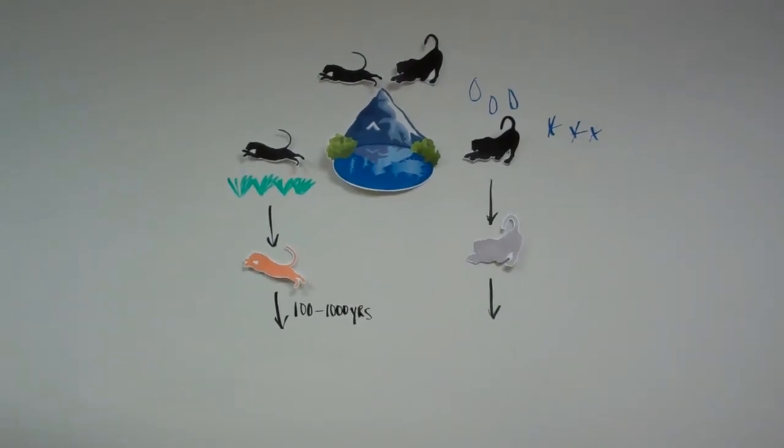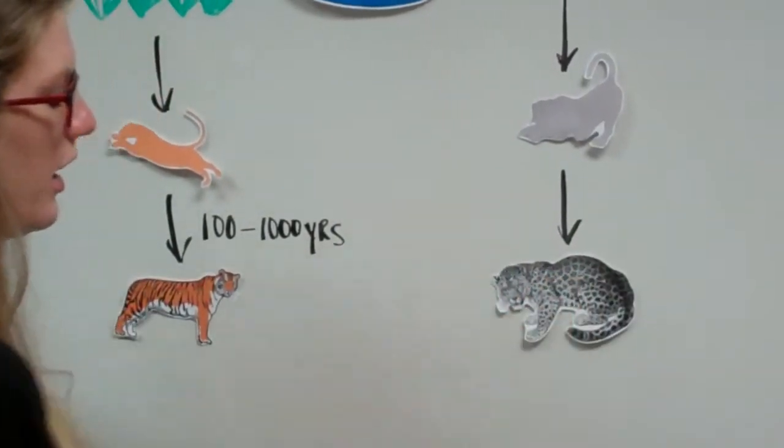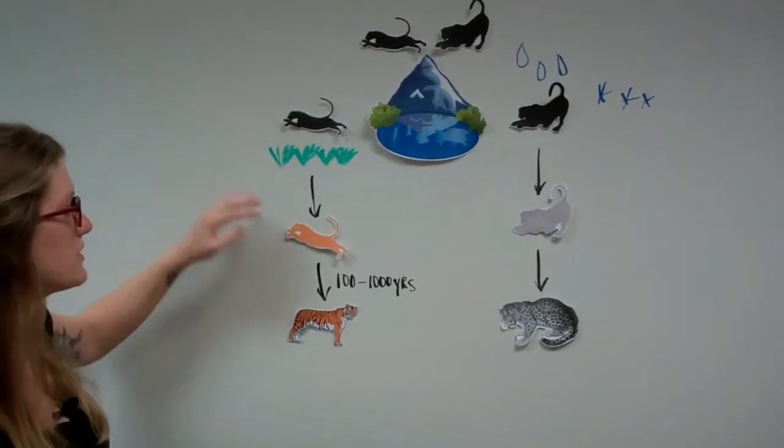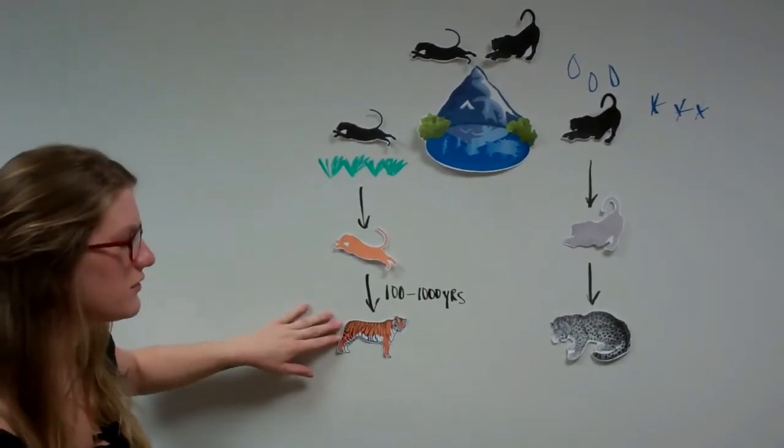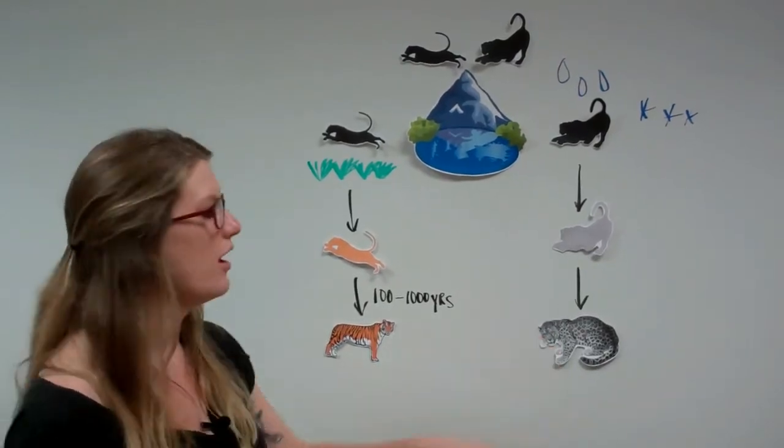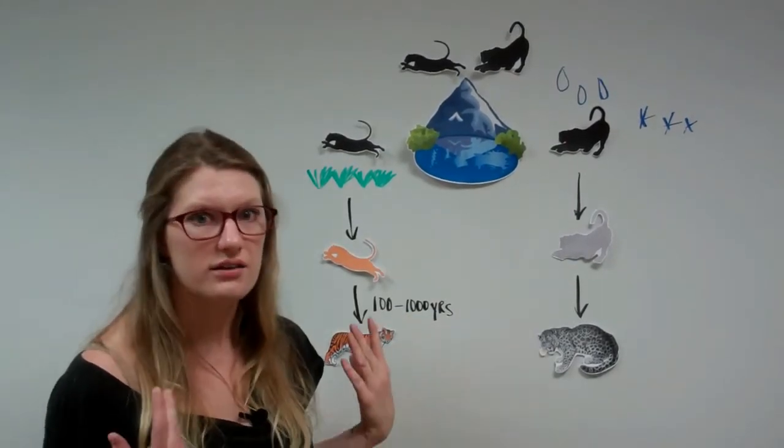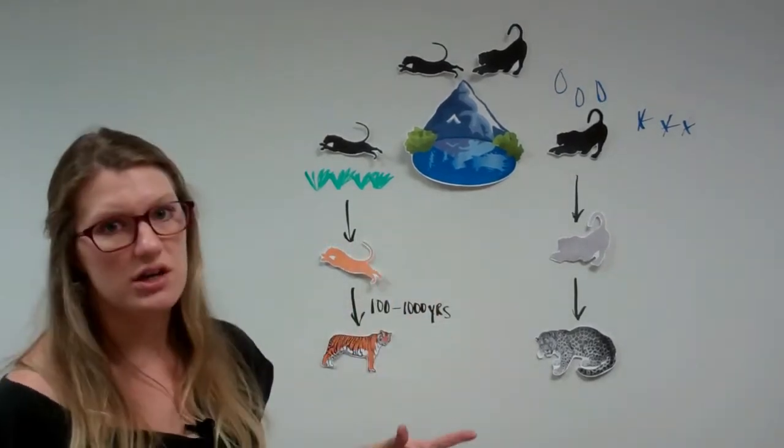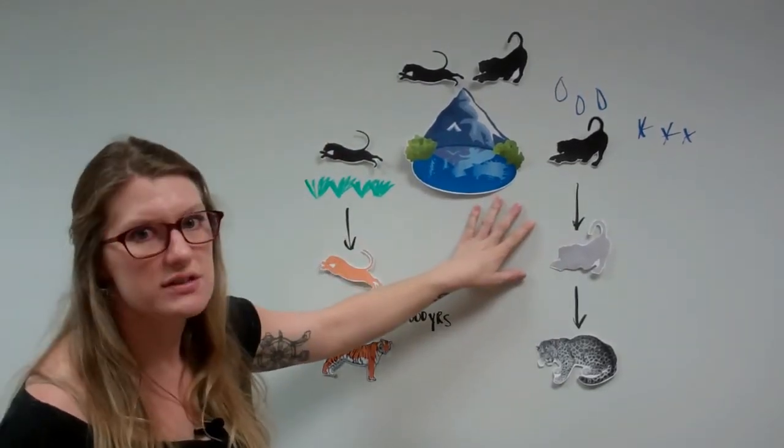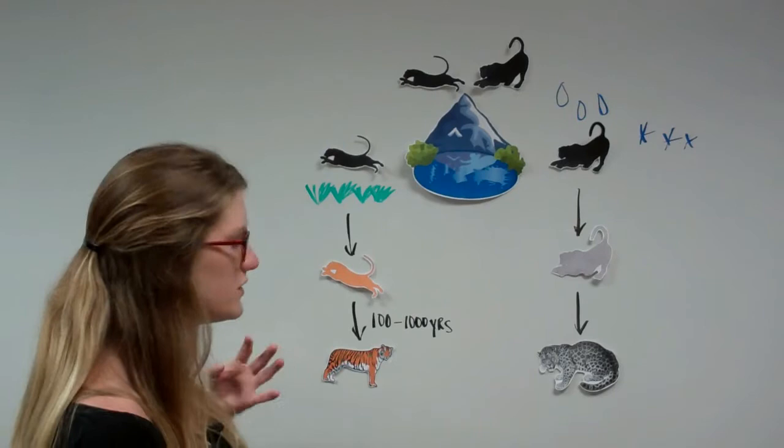And eventually, these cats will become so different from each other that now they become different species like the tiger or the snow leopard. And it's through, again, putting environmental pressure to favor certain traits, passing those traits down generation to generation that causes enough differences to acquire within the populations of cats that now these cats are so different from each other that if they were to breed, they cannot produce fertile offspring. They are now reproductively isolated and thus considered two new species. And so this is how speciation happens. You have a group of species, they get separated.